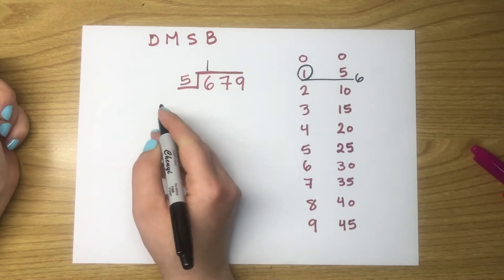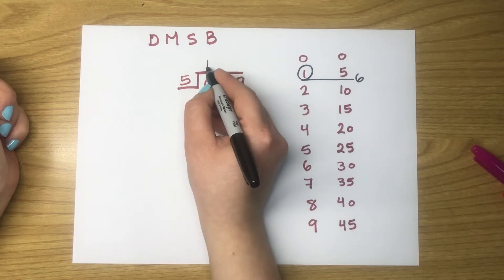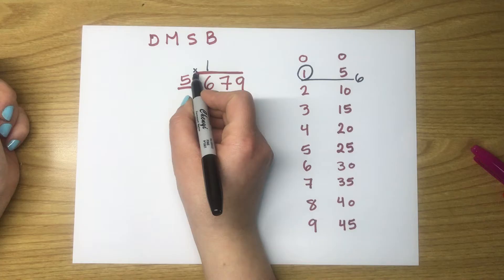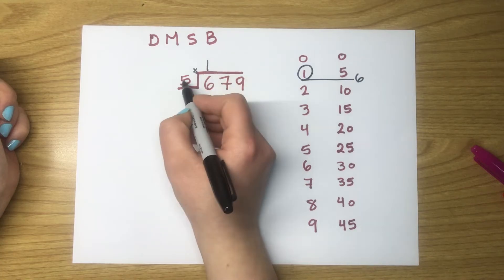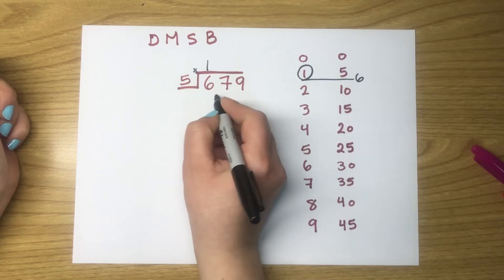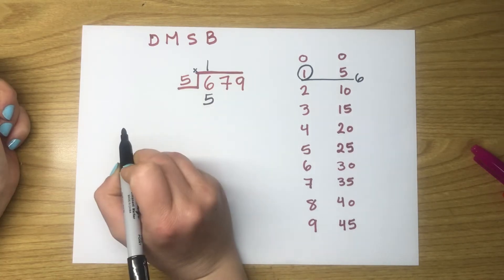Now, let's go to multiplication. We are going to multiply 1 times 5. A small multiplication sign to remind us. 1 times 5 equals 5. We have to put the answer underneath the 6 that we are dividing. This is multiplication.